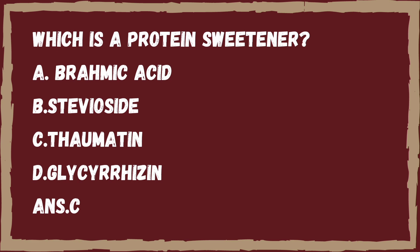The right answer is Option C, that is thaumatin. It is a group of intensely sweet proteins isolated from the fruit Thaumatococcus daniellii. It is an odorless, cream-colored powder, and most importantly it is 2000 times sweeter than sucrose. It is the only protein sweetener approved by the FDA and the European Commission.